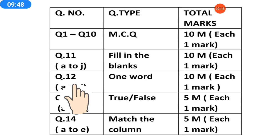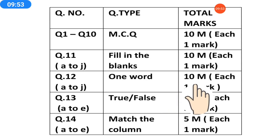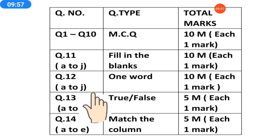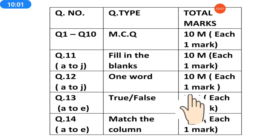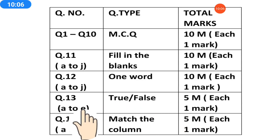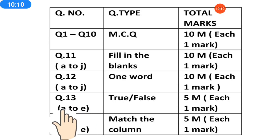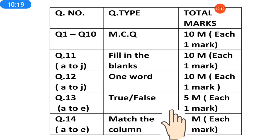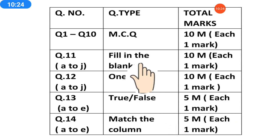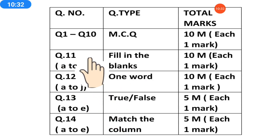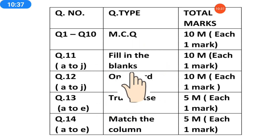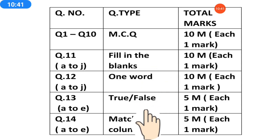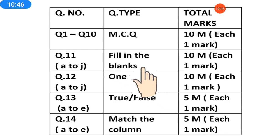Question 12 will be one word. In one word, you have to write one word answer. There will be 10 one-word questions, also A to J, 10 parts, 10 marks — each one word of one mark. In question 13, true-false will be there — 5 true-false, in A to E order. True-false is 5 marks, each one mark. And in question 14, match the column will be there — 5 marks match the column, each one mark. Note: one word can also come in question 11, and true-false can also come in question 11. The question order may change, but the marks will be the same. Whatever comes first, you have to write the answers and submit.